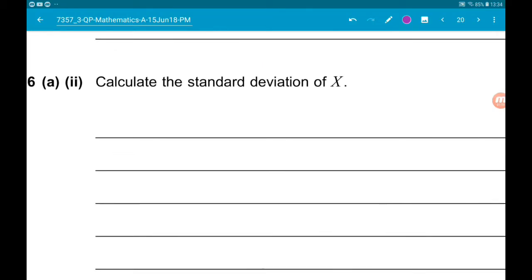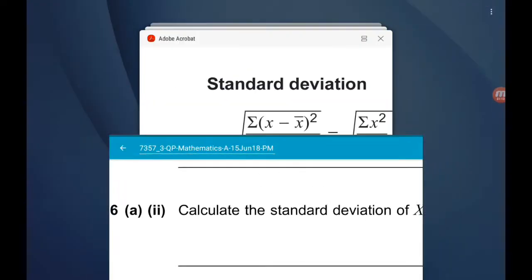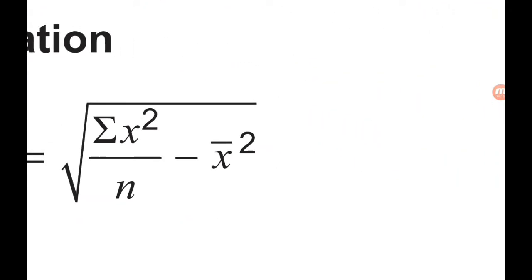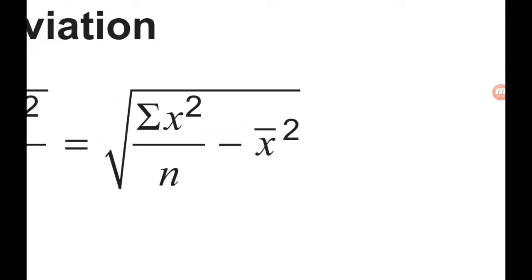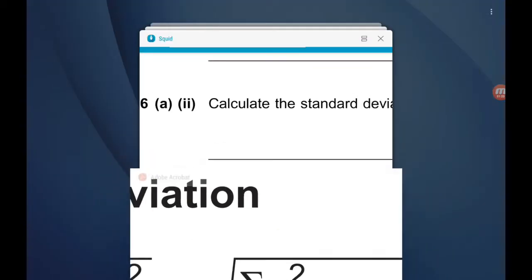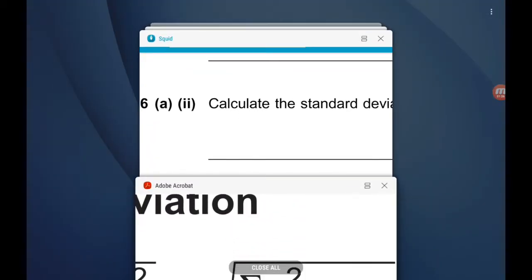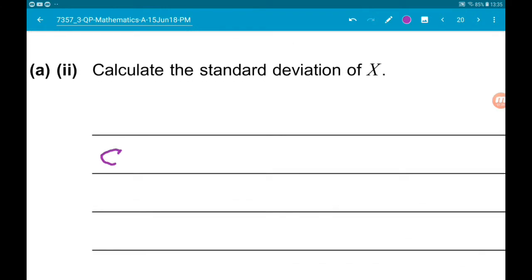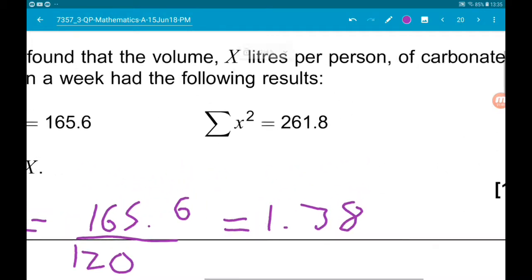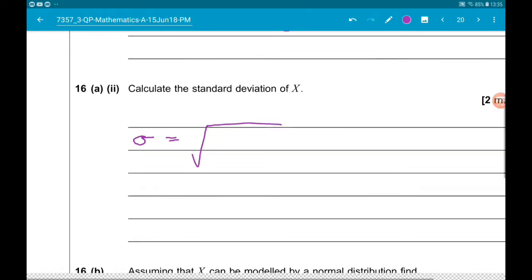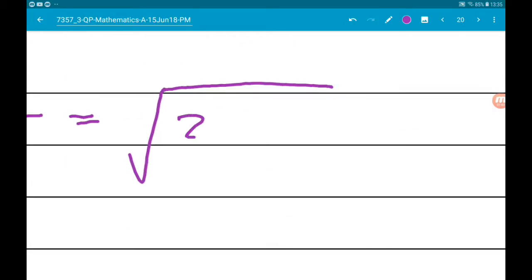Part two wants us to calculate the standard deviation. We're given the formula, so it's the square root of sigma X squared over n minus X bar squared. So sigma is the square root of sigma X squared, 261.8 over n, so over 120, minus 1.38 squared.